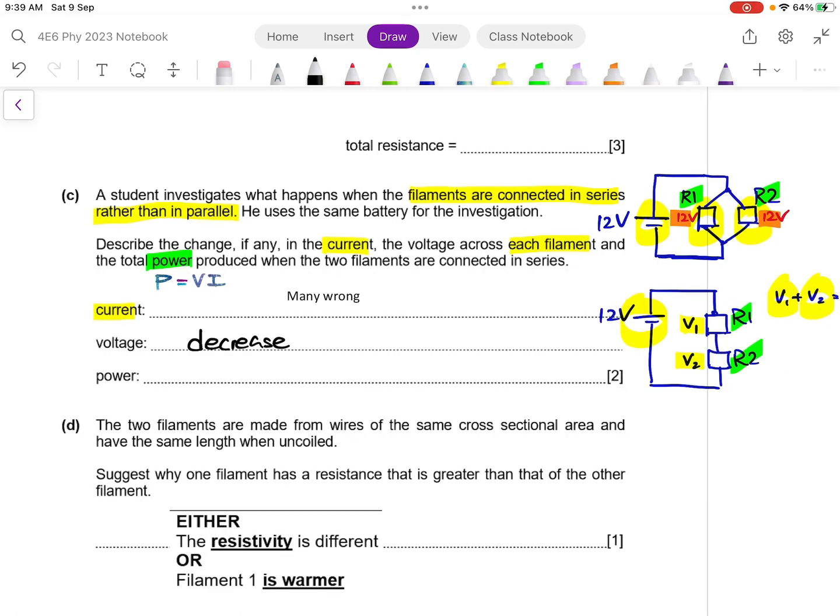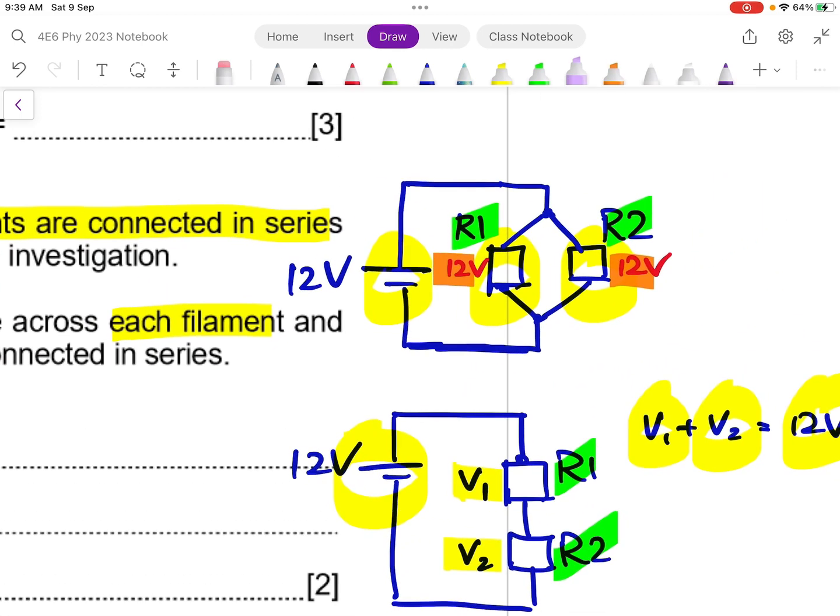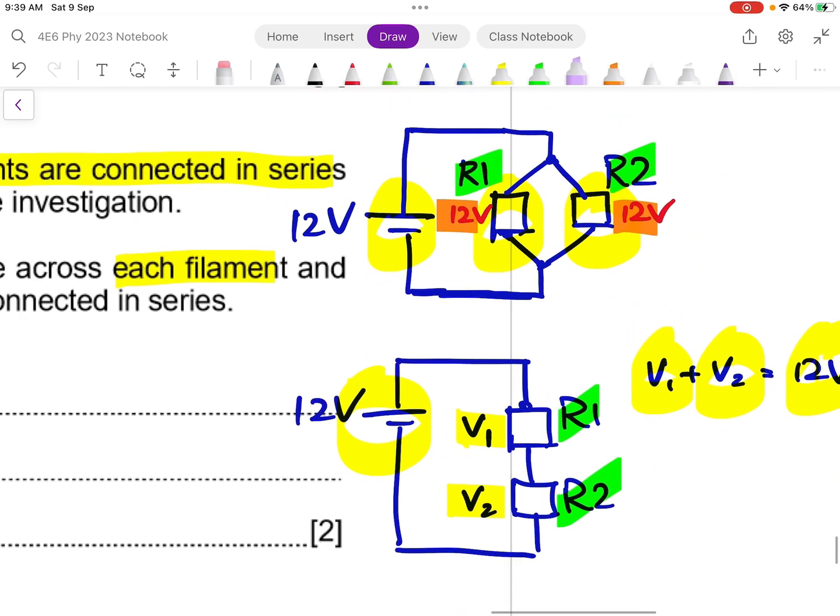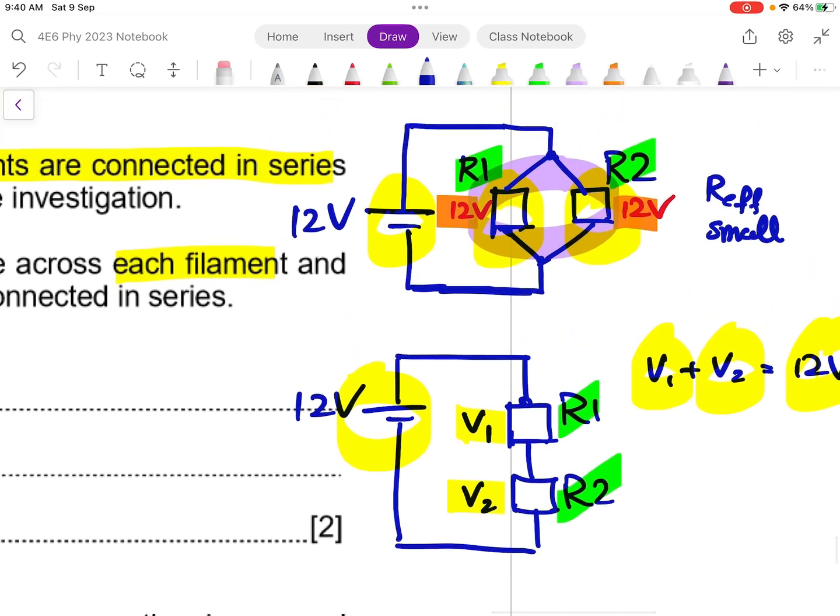As for the current, it is quite straightforward as well. So if you look at the original arrangement, the two filaments are in parallel, meaning that the R effective is going to be small. And when the two filaments are in series, you will end up with a much larger R effective.